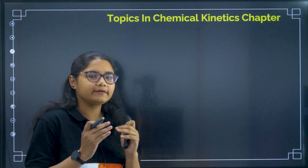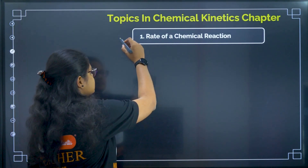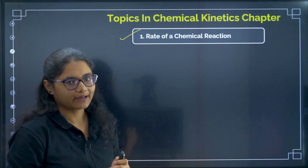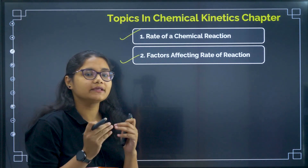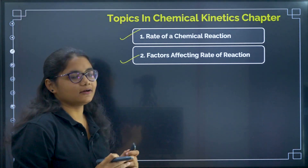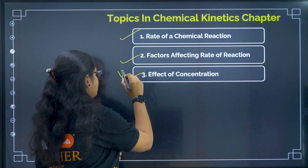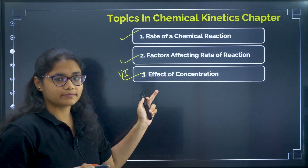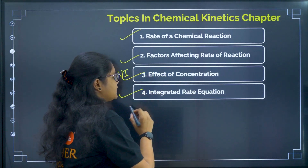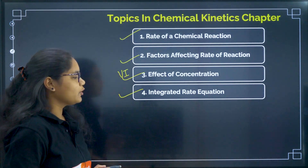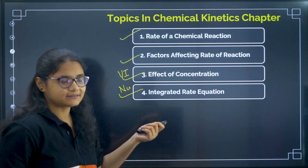Let us first quickly recap all the topics present in this chapter. First is rate of chemical reaction, where we discuss the types of rate. Second is factors affecting rate of reaction. Third is effect of concentration — a very important topic from which we get numericals. Next is integrated rate equation, also very important, where numericals are asked for first order and zeroth order.